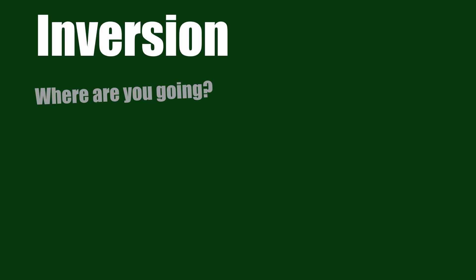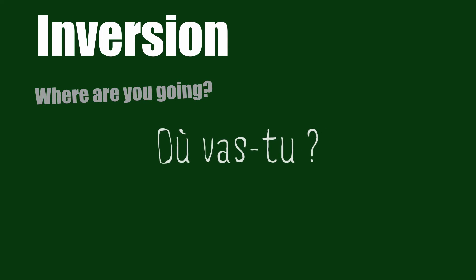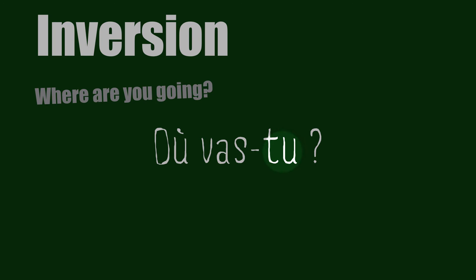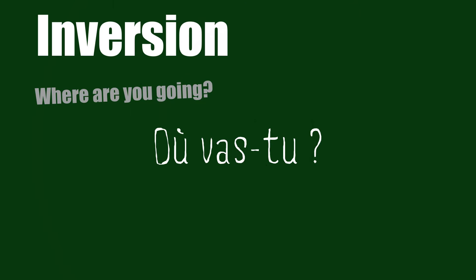Let's see now an inversion. The inversion: where are you going? With the same question, present tense. Où vas-tu? As you can see here, the subject 'tu', who was previously before in our affirmative sentence, is now just after the verb — so it's an inversion. Où vas-tu? It's a second way to say 'where are you going?' in French.